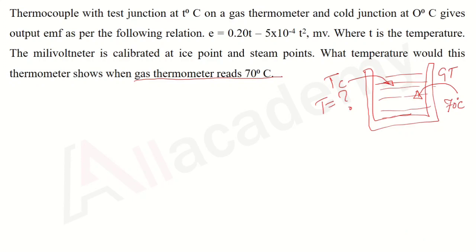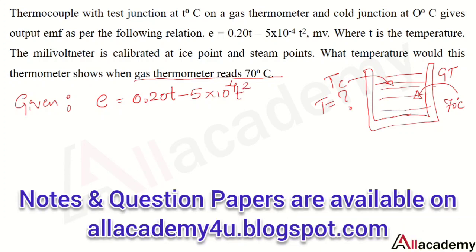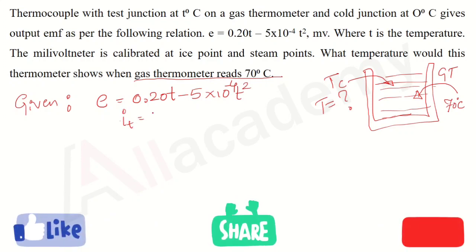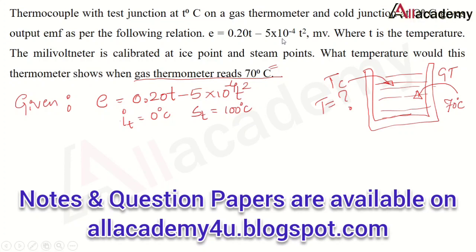The relation for this thermocouple is given as E = 0.20T − 5×10⁻⁴T². The given data: ice point temperature is 0°C, steam point temperature is 100°C, and one more temperature given is 70°C — the unknown temperature on the gas thermometer. This is the relation between the thermocouple EMF and temperature.